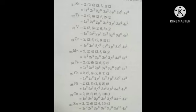Scandium has atomic number 21. We write its configuration as 1s2, 2s2, 2p6, 3s2, 3p6, 4s2, 3d1. Here we should note that first we fill the 4s subshell, and after that the remaining electrons should be filled in the 3d subshell.